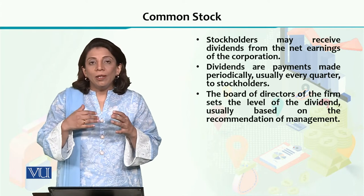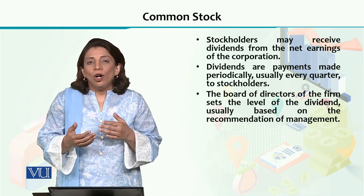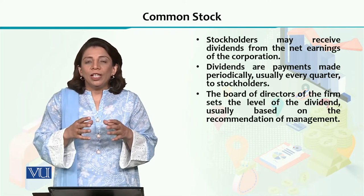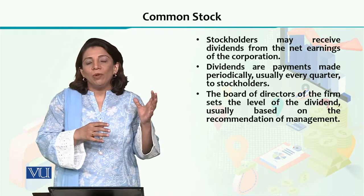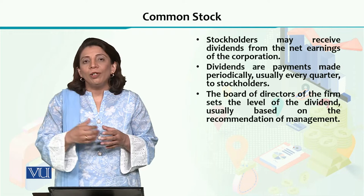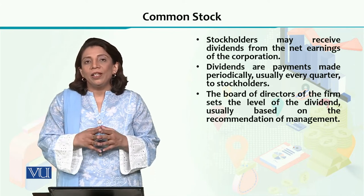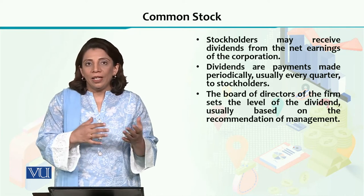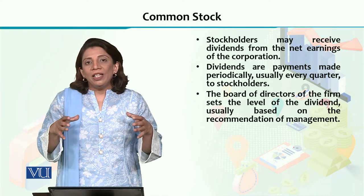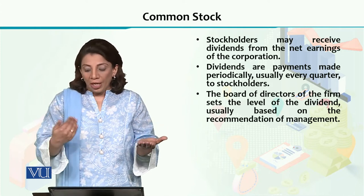When common stocks are issued by a listed company, after paying all their costs and payments, the remaining profits are then decided upon — the company decides whether to distribute them to shareholders as dividends or to reinvest them. The frequency of dividend payment is decided by the board of directors, whether it will be annual, biannual, or quarterly.